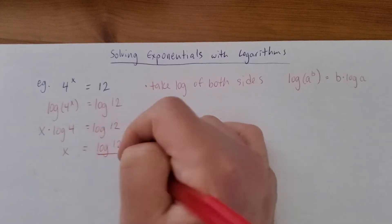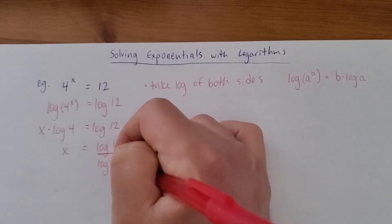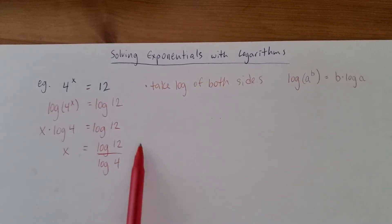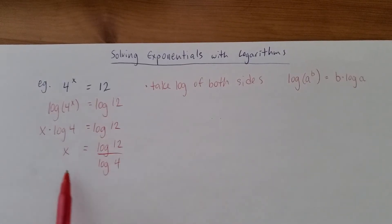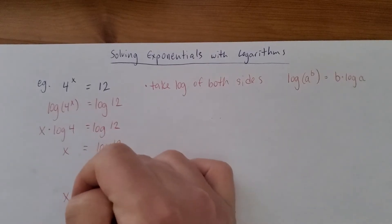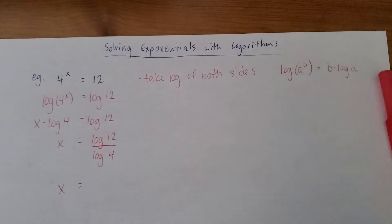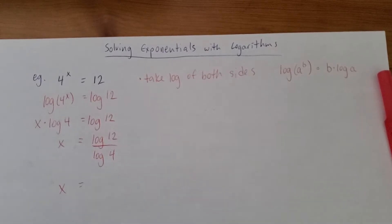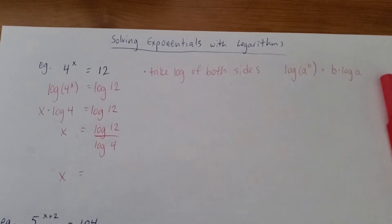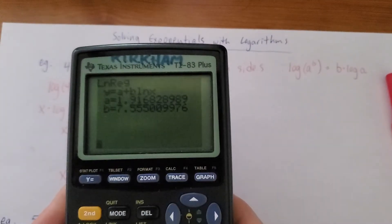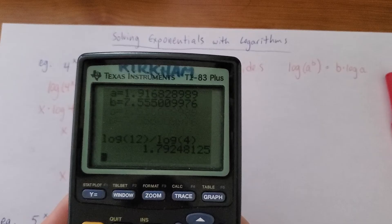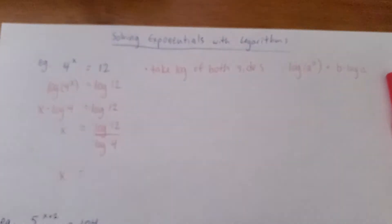We just have to divide both sides by log 4. So this is my answer in just terms of logs. I can get it as a decimal. We can do log 12 divided by log 4. But I think getting it to this step is the most important thing. So I'll just finish this up. Log 12 divided by log 4. We get 1.79. Done.